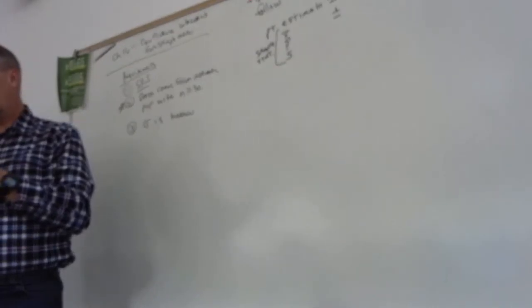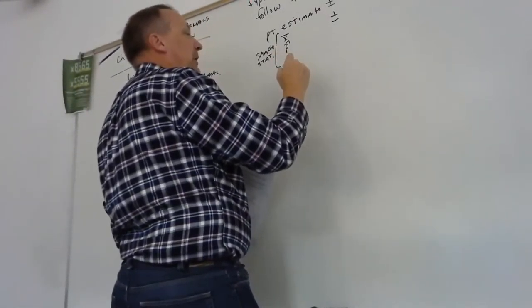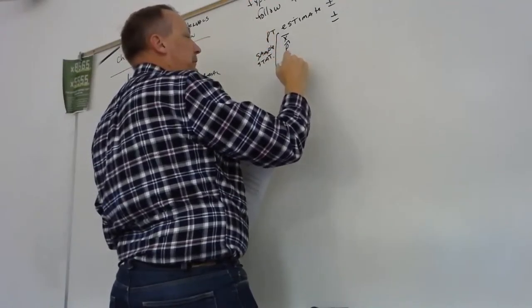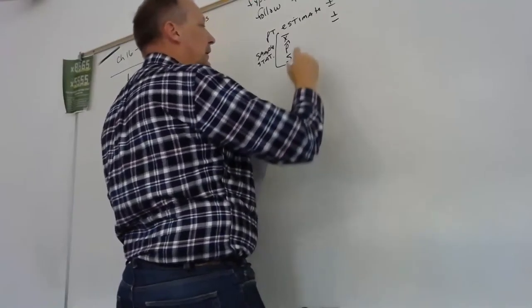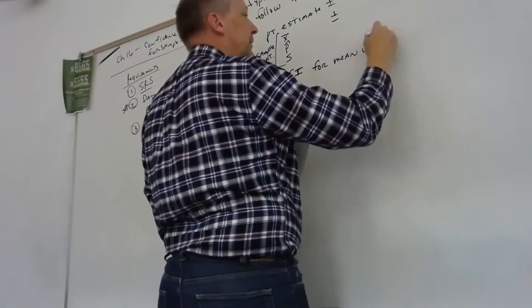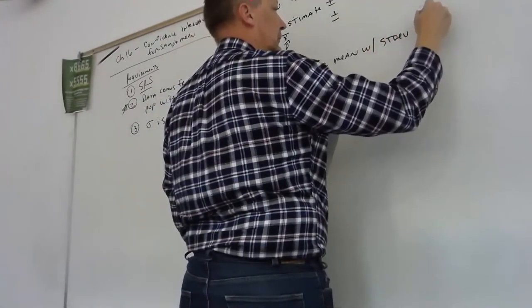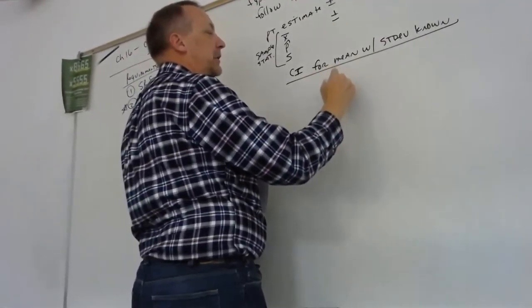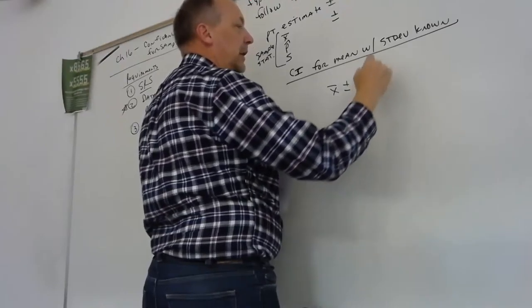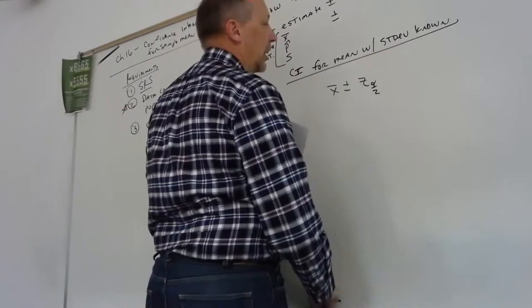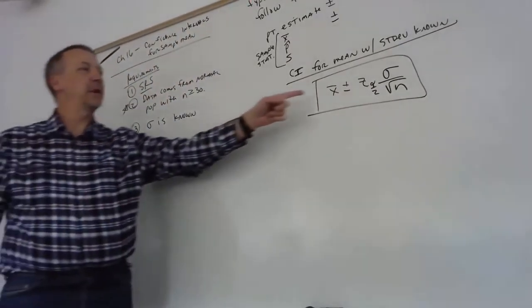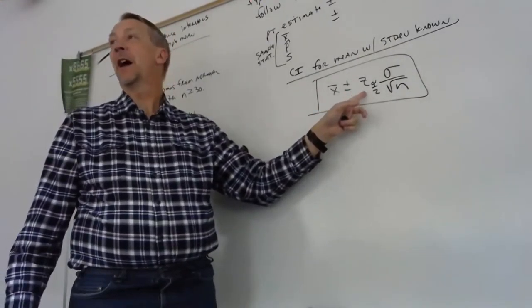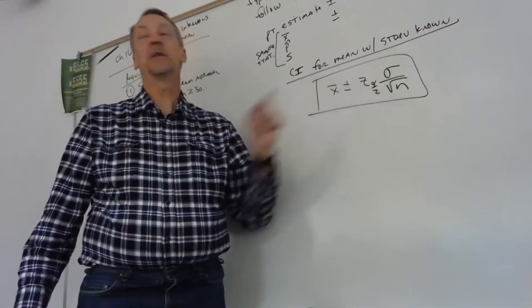Now, I am going to give you the formula that you're going to need. Your formula is going to be, for this chapter, confidence interval for a mean with standard deviation known. It's going to be x-bar plus or minus z sub-alpha over 2 times sigma over the square root of n.